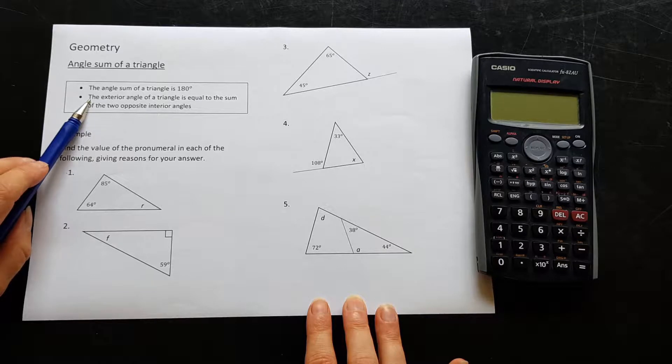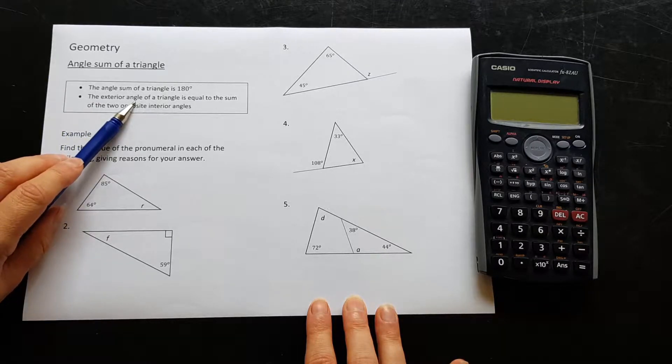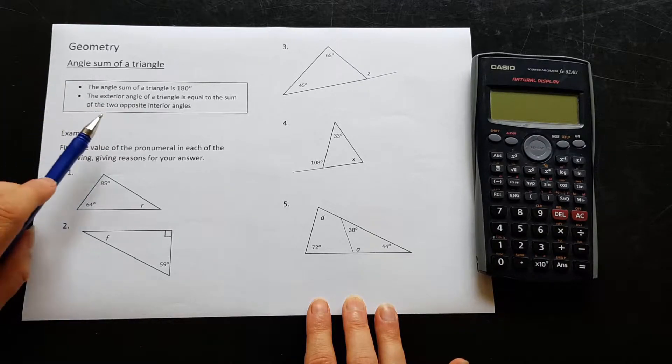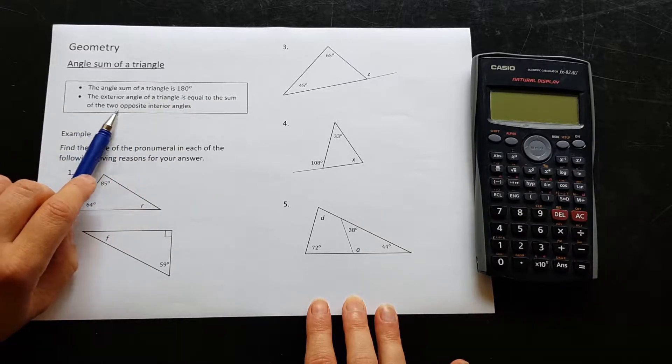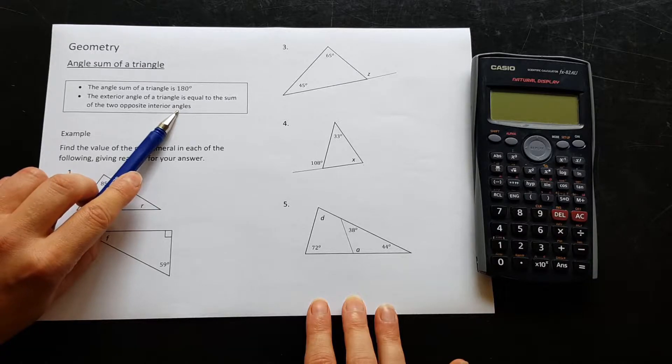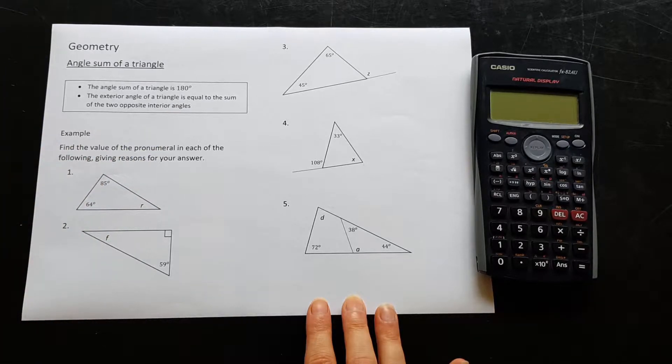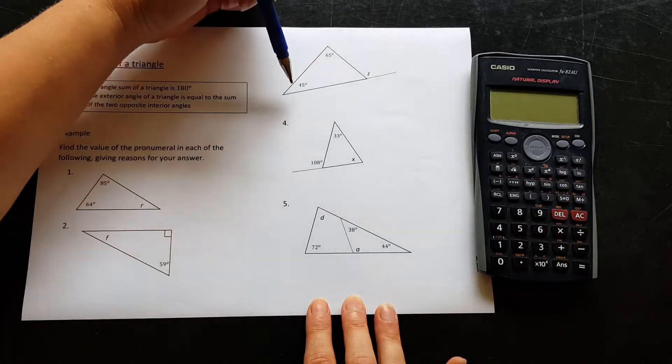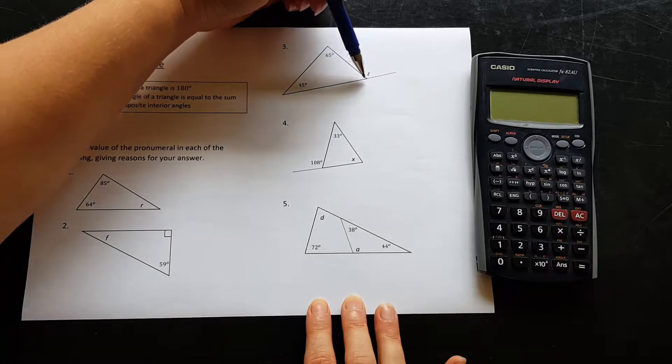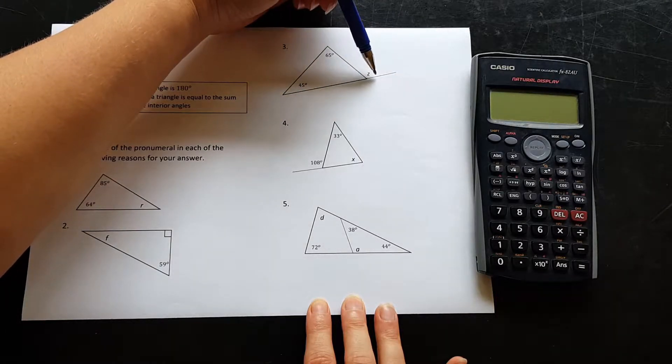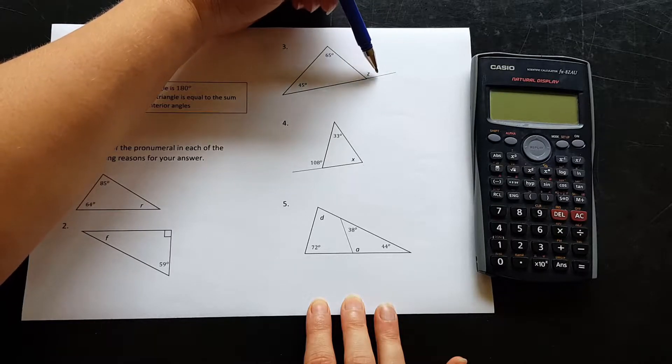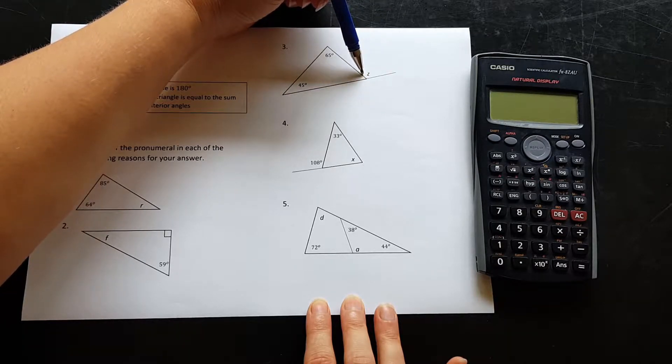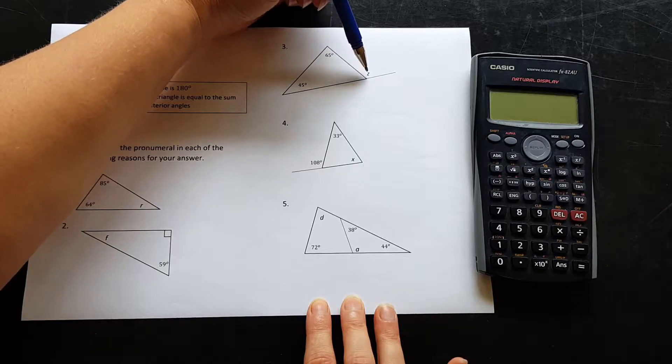The second rule is called the exterior angle rule, and that is the exterior angle of a triangle is equal to the sum of the two opposite interior angles. It sounds a little bit strange, but what that means is an exterior angle is if I take one side of the triangle and I extend it out the side like this one out here. Okay, so that's this angle out here is called the exterior angle, and that angle is equal to the two opposite interior angles.